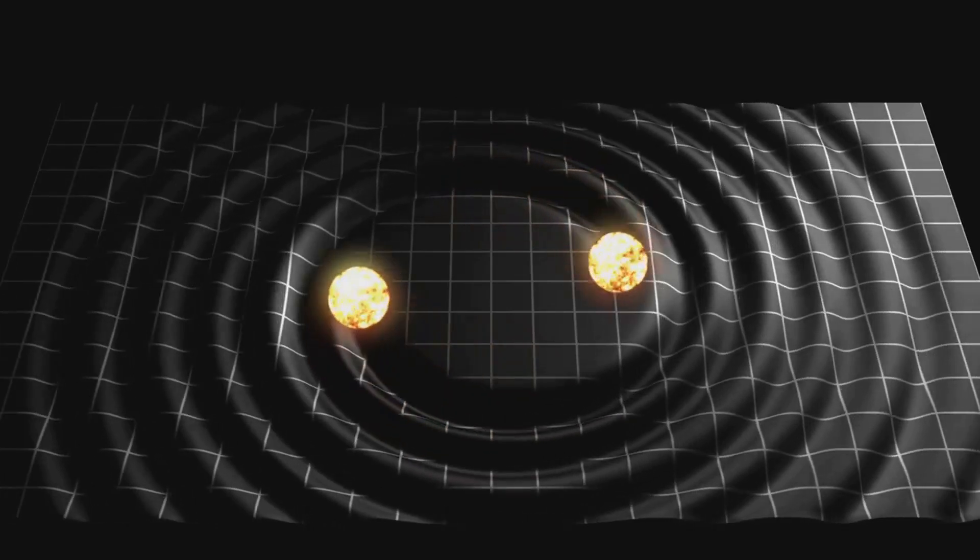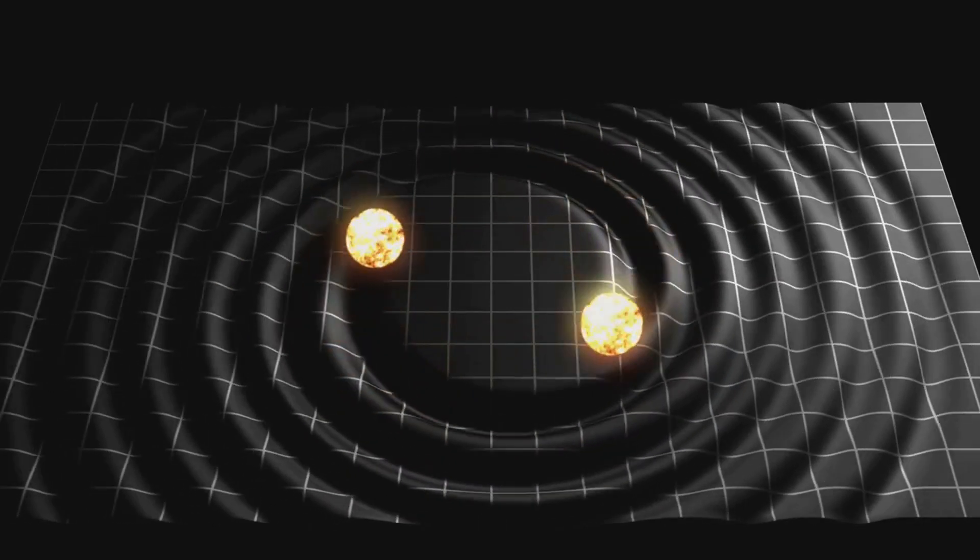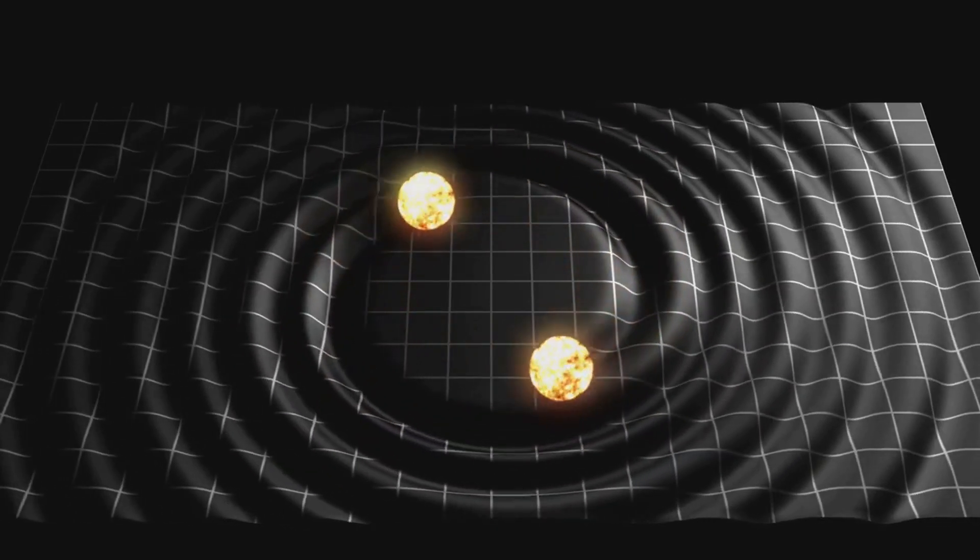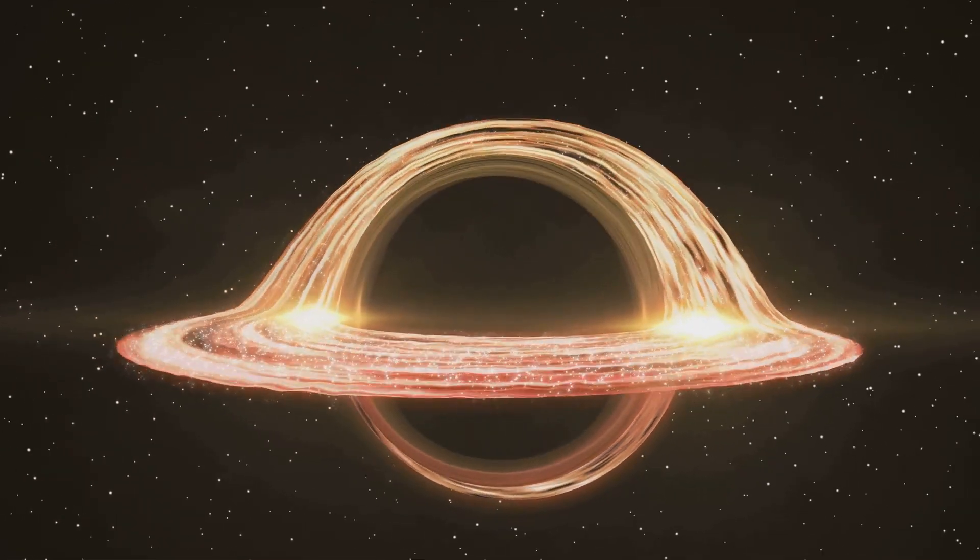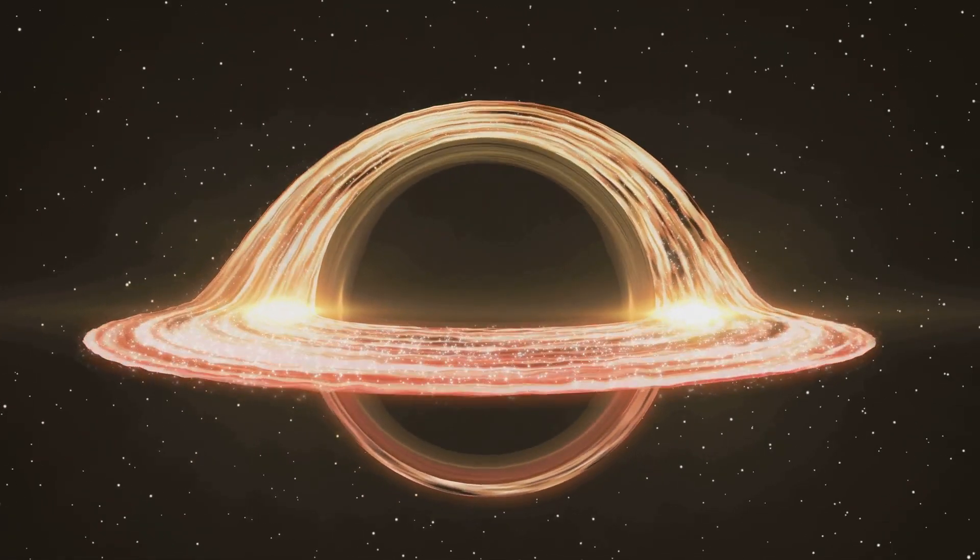Einstein's theory of general relativity revealed that gravity is not merely a force but an intrinsic property of space-time itself. Massive objects, like stars and planets, warp the fabric of space-time, creating what we perceive as gravity. This warping of space-time dictates how objects move, shaping the universe at all scales.